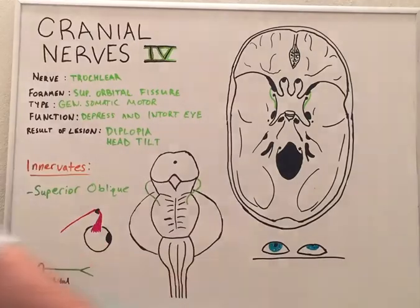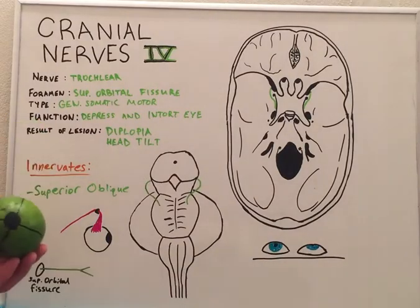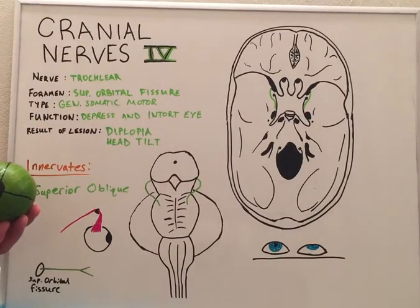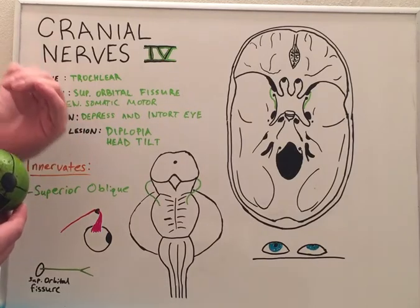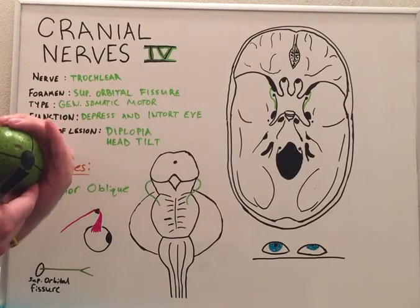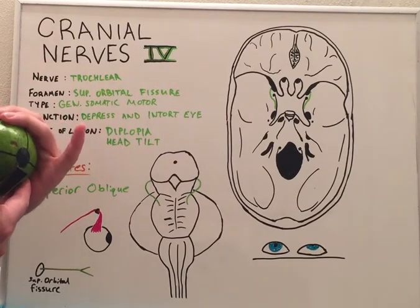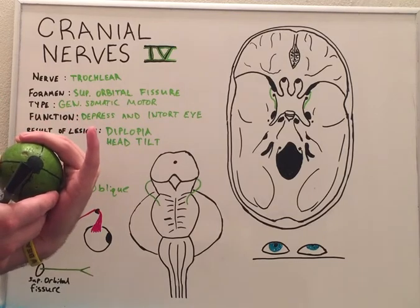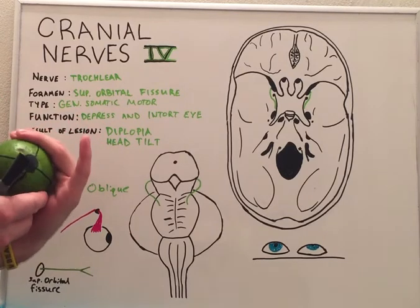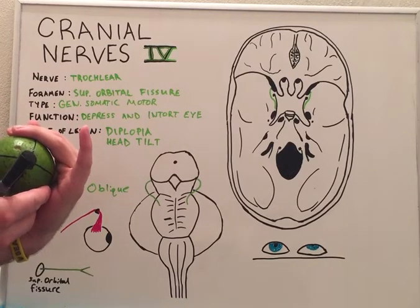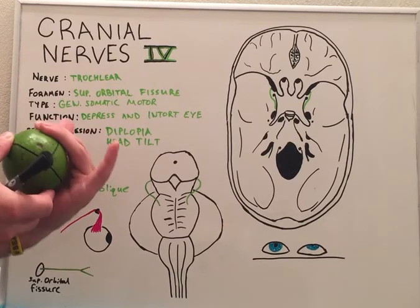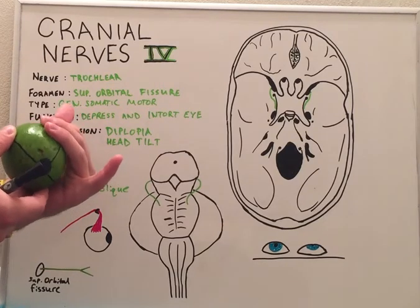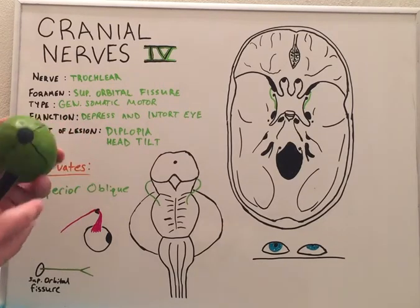If we look at this avocado and imagine it as the eyeball, the superior oblique muscle would wrap around it in this fashion, and when the muscle contracts it would both depress the eyeball and pull it inward.